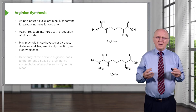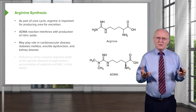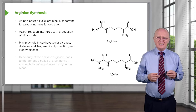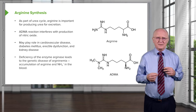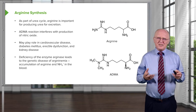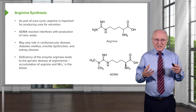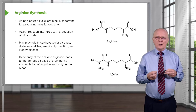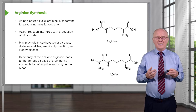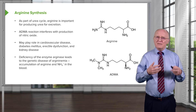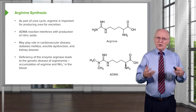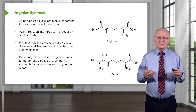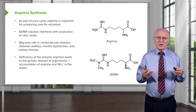Arginine may play a role in very important diseases involving cardiovascular disease, diabetes mellitus, erectile dysfunction, and kidney disease — so it is a very important amino acid. Deficiency of the enzyme arginase leads to the genetic disease known as argininemia. Argininemia involves the accumulation of arginine and, more importantly, ammonium ions in the blood. Those ammonium ions, as described, are toxic.